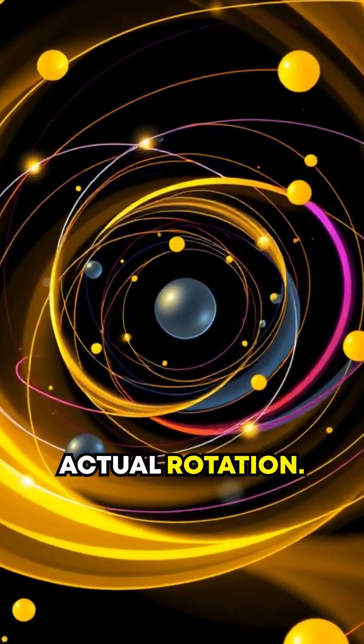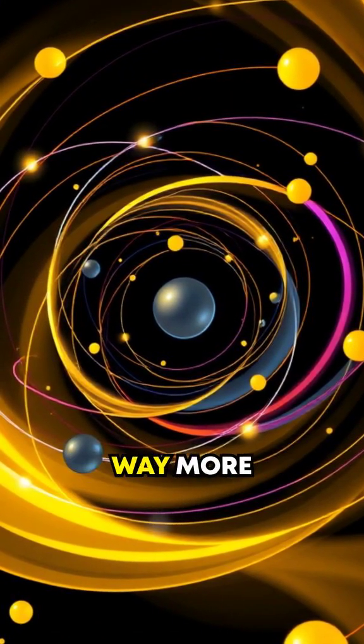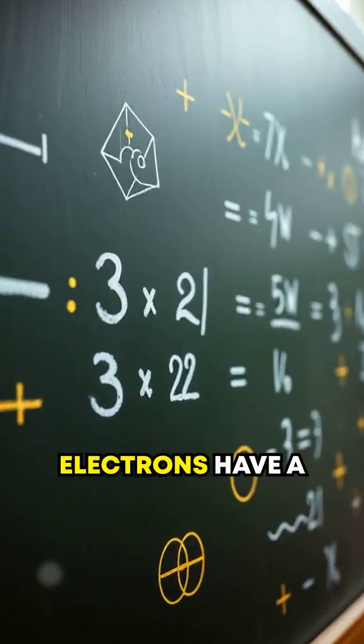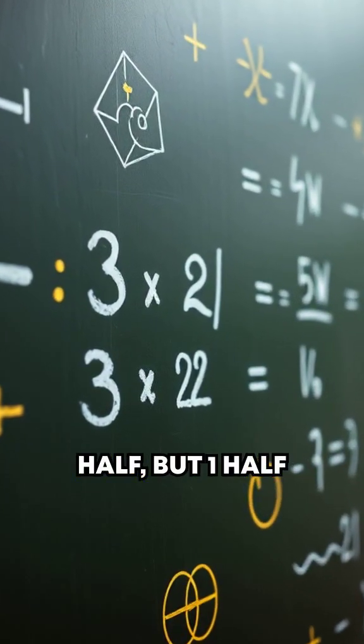Spin isn't an actual rotation. It's a quantum property that's way more abstract. Here's the kicker. Electrons have a spin value of one half. But one half what?